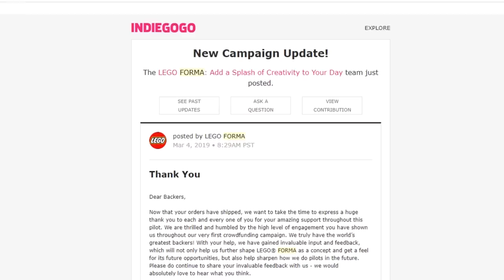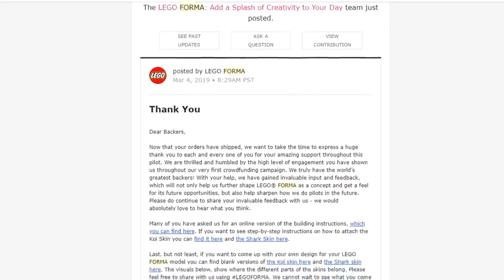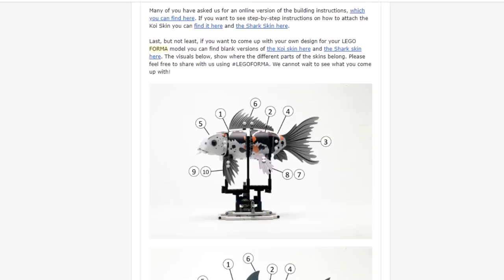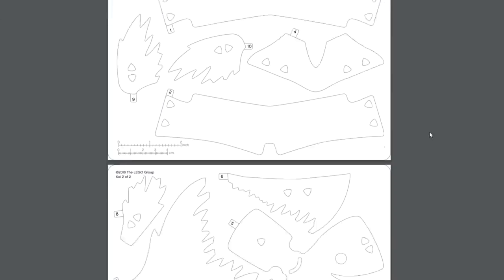Because we supported the Forma Kickstarter campaign, we regularly got updates about Forma related news. One of these included a link to a downloadable PDF featuring a blank version of the Koi skin for fans to make their own designs. Now I want this skin to be animated, so I'm going to create line art designed with colors in three stages. I'll shoot the model three times, replacing the skin between each take, and edit the footage in the end so the skin actually looks animated.